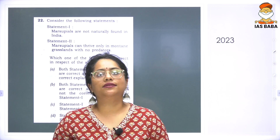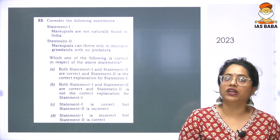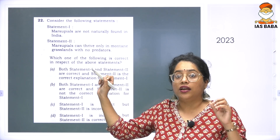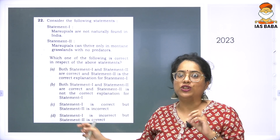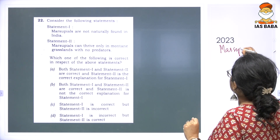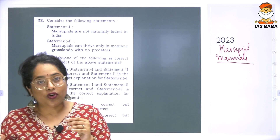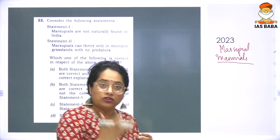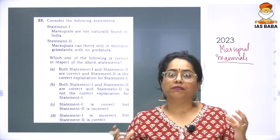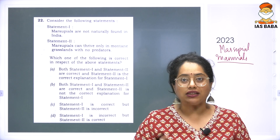The first question we are going to discuss in the species theme is a 2023 question about marsupials. The question reads: Statement 1 — marsupials are not naturally found in India. Statement 2 — marsupials can thrive only in mountain grasslands with no predators. To answer this question, you need to know what a marsupial is. A marsupial is basically a type of mammal wherein they give birth to their young one in a very premature form, and it is outside the body of the mother that the complete development of the young organism happens.